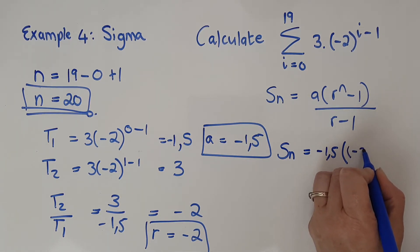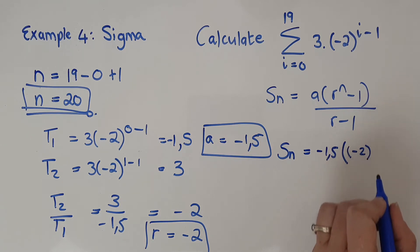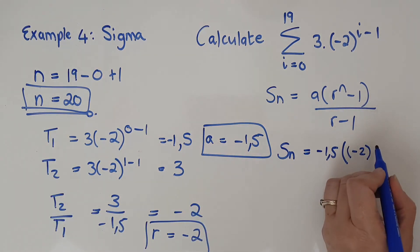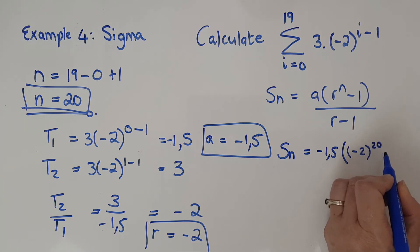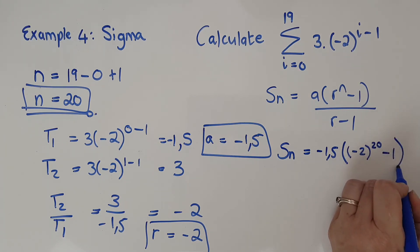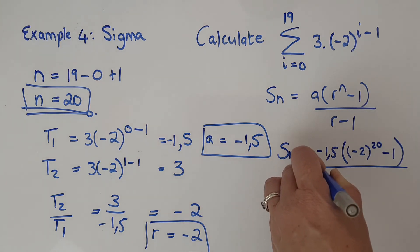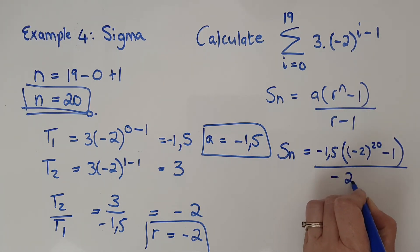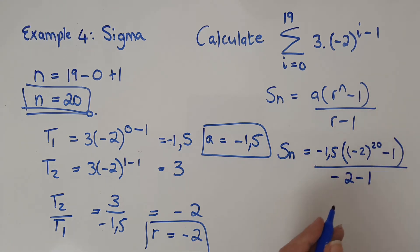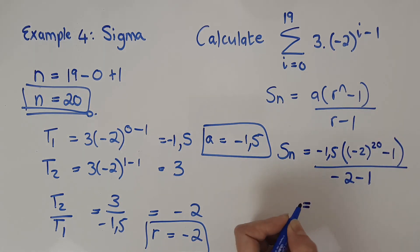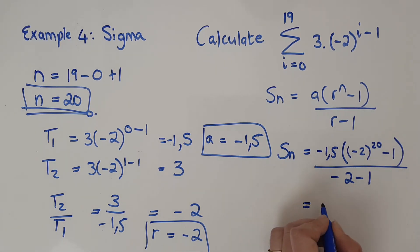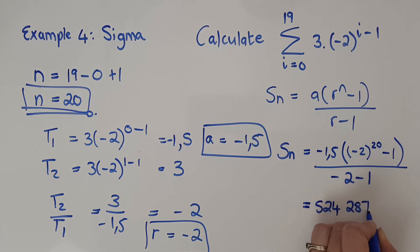So r is negative 2, to the power of n which is 20, minus 1. The main risk here is calculator errors, not incorrect substitution, so just do it really carefully. If you don't agree with my answer, go back and check your typing — it could be a little typo. When I type that in, I get 524287.5.